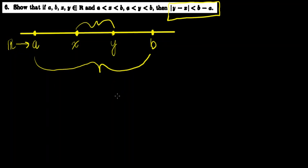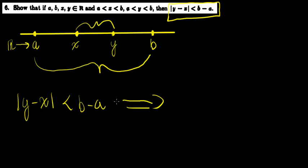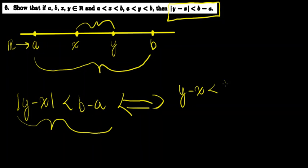But let's prove this in a rigorous way — we're practicing our careful proof writing. First, let's dissect what this conclusion is saying. If the absolute value of Y minus X is strictly less than B minus A, let's rewrite this in a more accessible way. This statement is equivalent to Y minus X being strictly less than B minus A, and X minus Y being strictly less than B minus A.